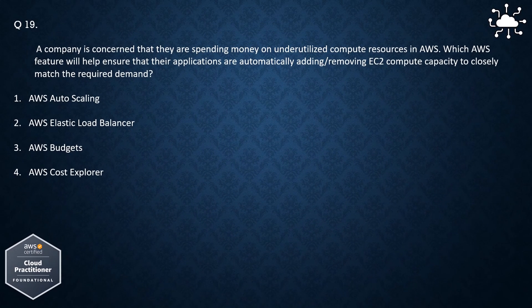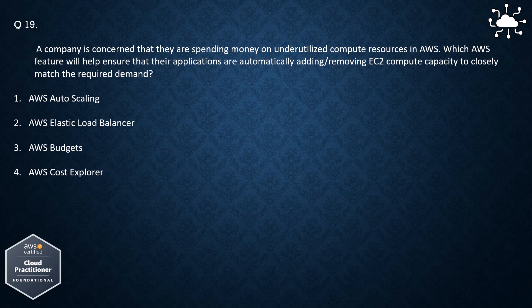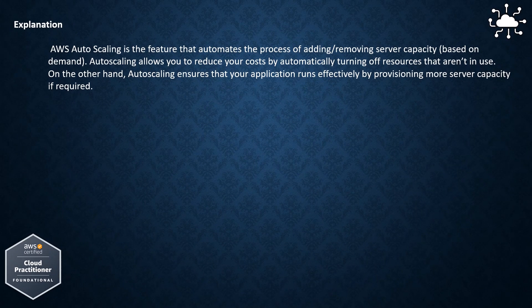Question 19. A company is concerned that they are spending money on underutilized compute resources in AWS. Which AWS feature will help ensure that their applications are automatically adding or removing EC2 compute capacity to closely match the required demand? 1. AWS Autoscaling, 2. AWS Elastic Load Balancer, 3. AWS Budgets, 4. AWS Cost Explorer. The answer is AWS Autoscaling.